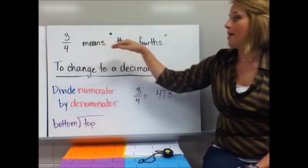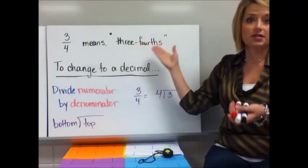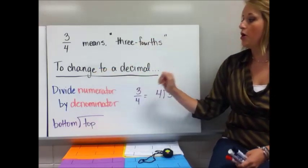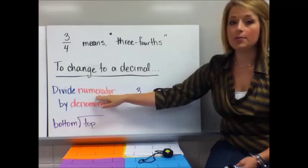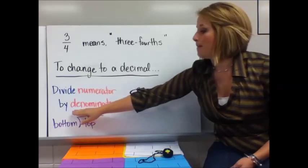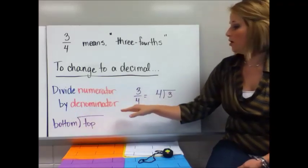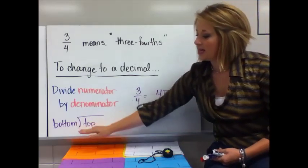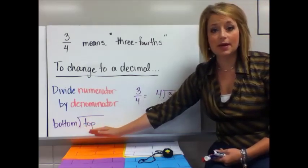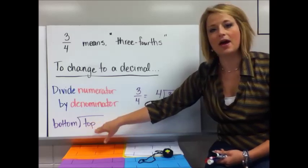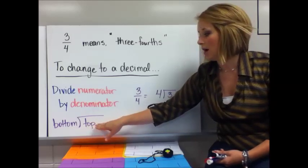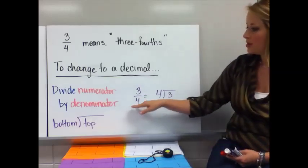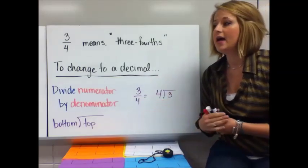Three-fourths. You know that that means three-fourths if you were really going to write it out. Now to change that to a decimal, you're going to divide the numerator, which is the top number, by the denominator, which is the bottom number. This diagram right here seems to be helpful for students because the top number goes in the box, and the bottom number goes outside of the box. So let's actually divide this out.